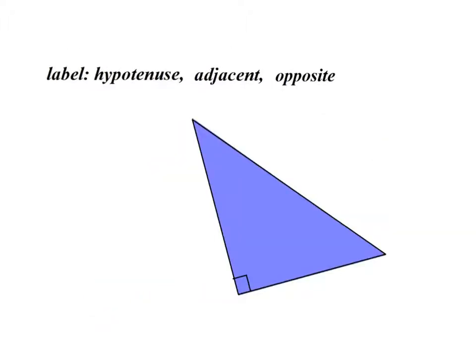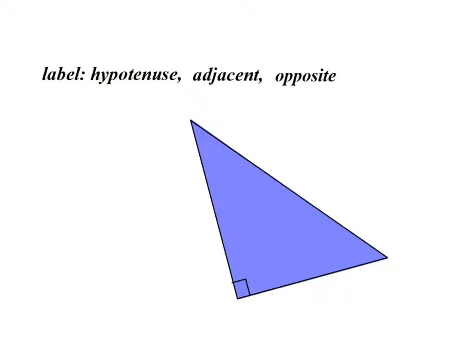All right, I'm going to label this triangle A, B, C. And I'm going to tell you that the reference angle is going to be angle A. And then stop the video, or it's going to stop automatically here, and ask you some quiz questions.